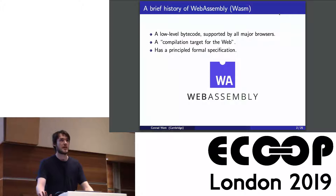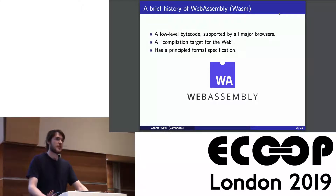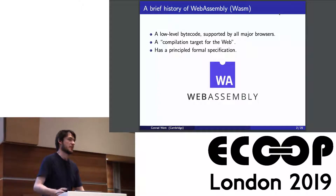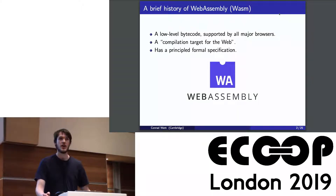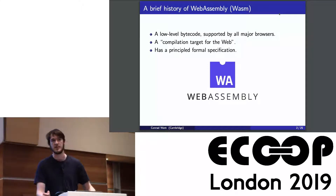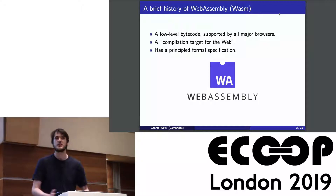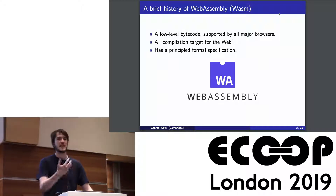A brief rundown of what WebAssembly is: WebAssembly is a low-level bytecode that's now been implemented in all major browsers, and it's sold as a compilation target for the web. So the idea is if you have some C code that you'd like to run in someone's browser, you can compile that to WebAssembly, embed it in your website, and then run that in the browser with near-native performance. WebAssembly is also interesting to us because it already comes with a completely precise formal specification maintained by the working group that specifies the language.